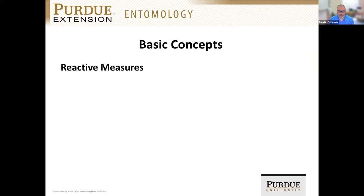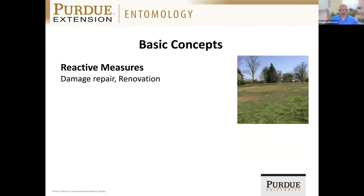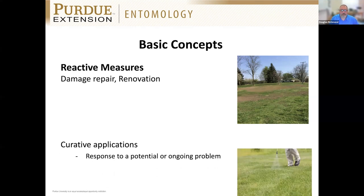The second part of this is the reactive measures — things we do after the fact to manage a problem that is coming into existence. We can take the approach of repairing the damage we see, renovating these areas to better-suited turf grass. But the other part of that is curative applications — a response to a potential or ongoing problem. If we see high pest populations, we can make a curative application right at the onset of damage and sort of reverse course, giving that turf an opportunity to recover.